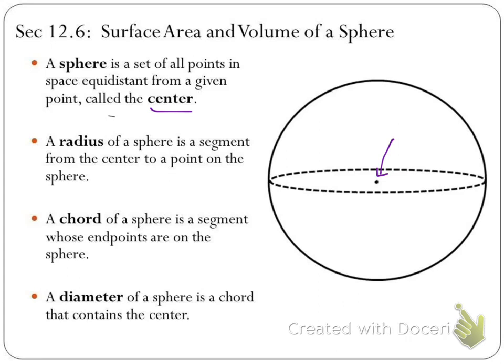The really important thing we're going to want here is the radius, because that radius is the distance that all the points are from the center — the same idea as in the circle. So that radius is going to tell us how big the sphere is.